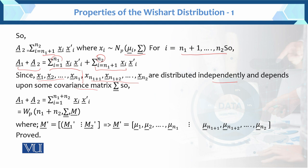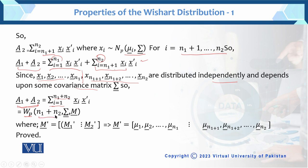Now A1 plus A2: this addition, written as a combined sum from i=1 to n1 plus the sum from i=n1+1 to n2, can be rewritten as the sum from i=1 to n1+n2. When expanded, this returns to the original form. So A1 plus A2 follows the Wishart distribution with n1+n2, and the variance and mean vector remain fixed. This proves that if the total Wishart is split into two parts, their sum also follows the Wishart distribution.